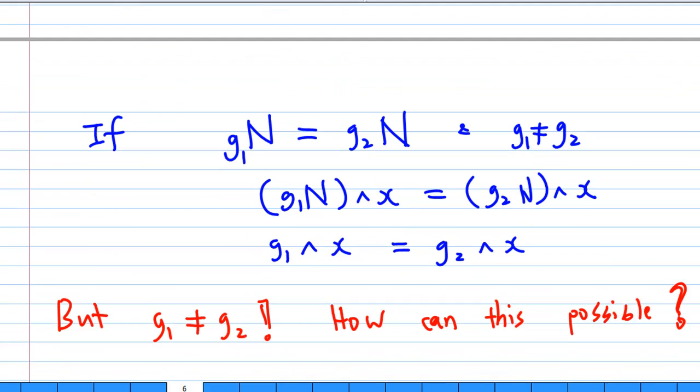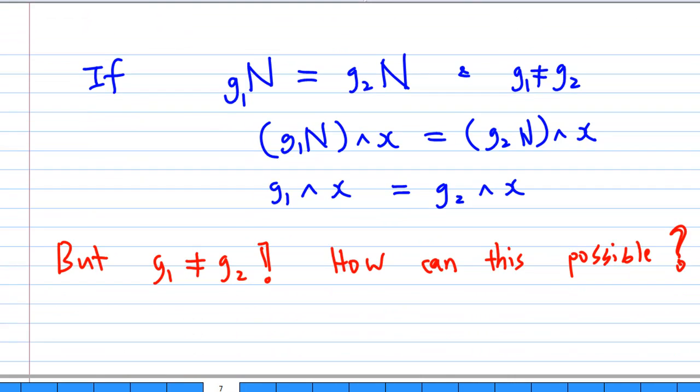Then, what is the problem now? Because if g1N equals g2N and g1 not equal to g2, then we expect g1N^x must equal g2N^x. But then, what is g1N^x? According to our construction, it's g1^x. But g1 is not equal to g2. How can this be possible?